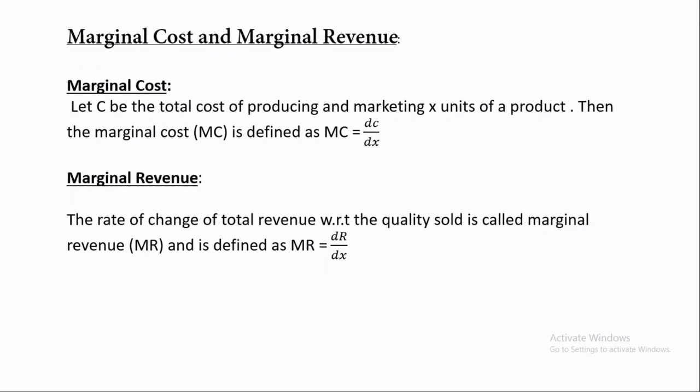Next is a very important topic: Marginal Cost and Marginal Revenue. If C is the total cost of producing and marketing x units, then Marginal Cost MC = dC/dx. Similarly, Marginal Revenue is the rate of change of total revenue with respect to quantity sold, defined as MR = dR/dx. I hope you are clear; you can pause and write it down.